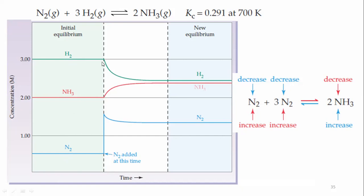When the concentration of nitrogen is increased, the stress is on the reactant side. According to Le Chatelier's principle, this stress should be relieved. The reaction proceeds towards the product side — the forward direction. With the passage of time, the concentration of reactants decreases and the concentration of products increases.